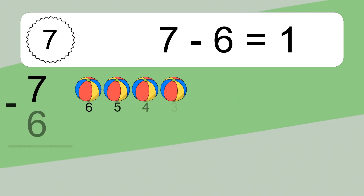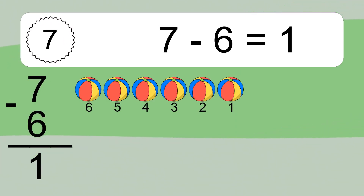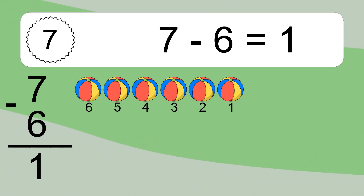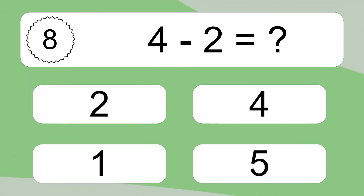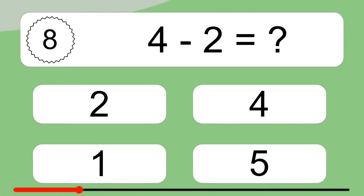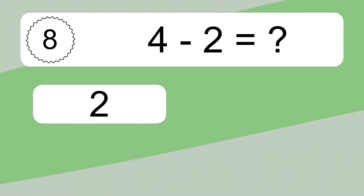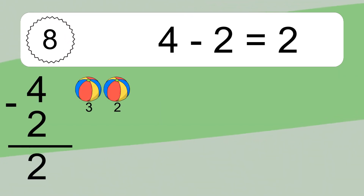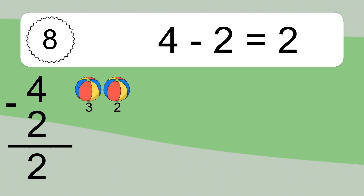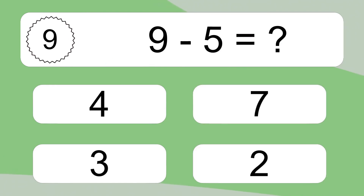Seven minus six equals what? Seven minus six equals one. Let's count it: six, five, four, three, two, one. Four minus two equals what? Four minus two equals two. Let's count it: three, two.